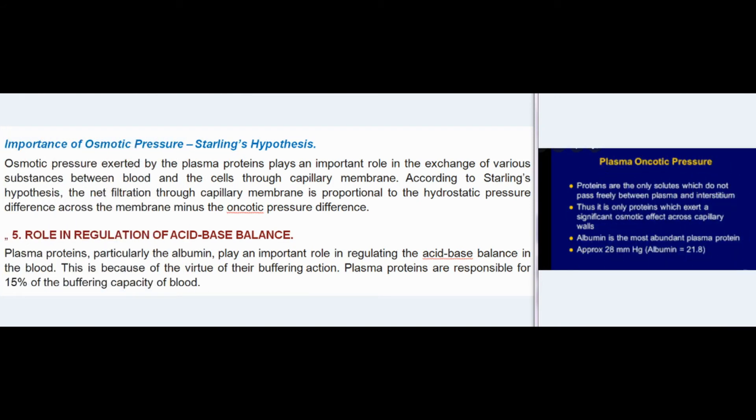Importance of osmotic pressure — Starling's hypothesis: Osmotic pressure exerted by plasma proteins plays an important role in the exchange of various substances between blood and cells through the capillary membrane. According to Starling's hypothesis, the net filtration through capillary membrane is proportional to the hydrostatic pressure difference across the membrane minus the oncotic pressure difference.